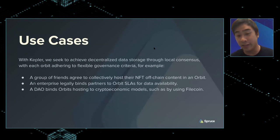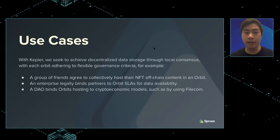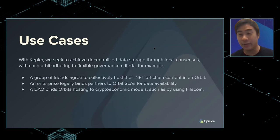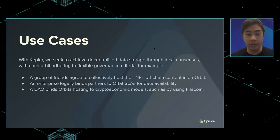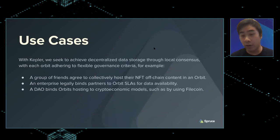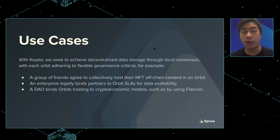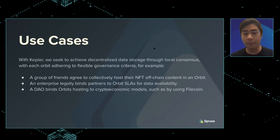Maybe you can build a CDN on this if you pin an orbit to a geography or certain kinds of machines. Maybe a DAO binds orbit hosting to crypto-economic models such as Filecoin or others, basically to ensure availability of off-chain content and also make sure there are consequences if the files aren't there.